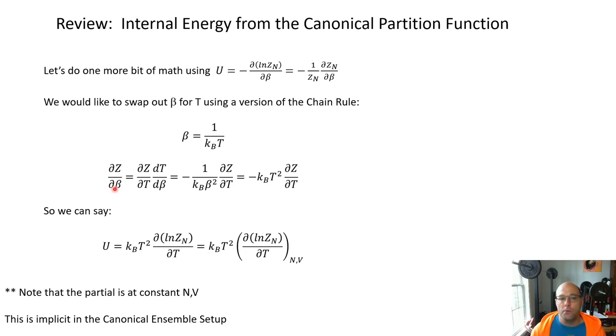So we can do a variation on the chain rule to swap beta out for temperature. Partial Z with respect to beta is partial Z with respect to T times derivative of T with respect to beta. So that's just a total derivative because this is just a simple single variable function. When you apply this rule you get minus one over kB beta squared partial Z partial temperature and that equals negative kB T squared partial Z partial T. And so we can finally say that an expression for U in terms of temperature instead of beta is kB T squared, negatives have cancelled, partial of ln Z sub N with respect to temperature and that partial is evaluated at constant N and V.